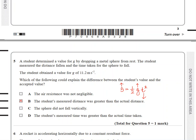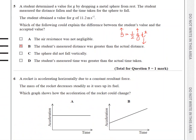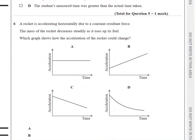Question 6: a rocket is accelerating horizontally due to a constant resultant force. The mass of the rocket decreases steadily. Focus on this part: the mass decreases steadily. When you recall the resultant force equals ma, and the question mentions a constant resultant force remaining constant, if the mass decreases, the acceleration must increase. My answer is B.